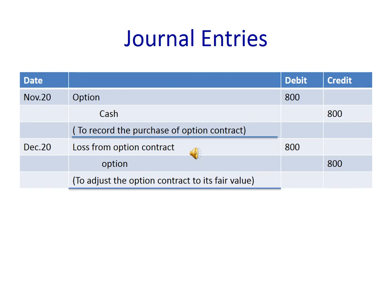On November 20, debit Option $800, credit Cash $800. On December 20, since the company decided not to exercise the option, the option expires worthless: debit Loss from Option Contract $800, credit Option $800.